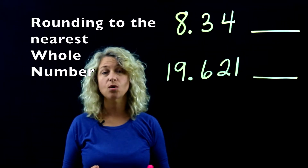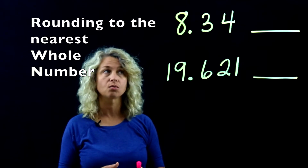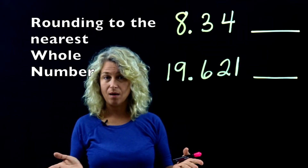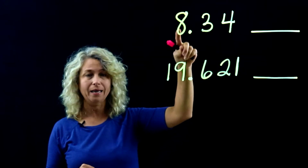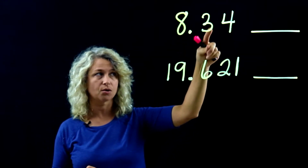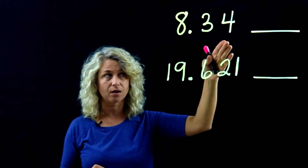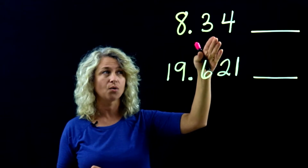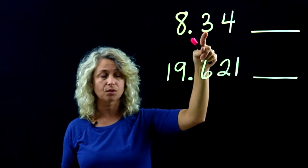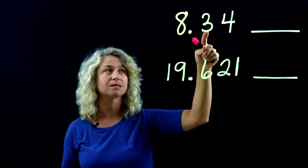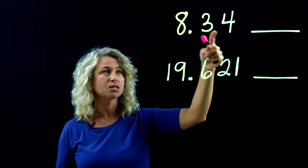Today we're going to round to the nearest whole number. Take a look at this example: 8 and 34 hundredths. You have to know your place value — the 8 is in the ones place, the 3 is in the tenths place, and the 4 is in the hundredths place.